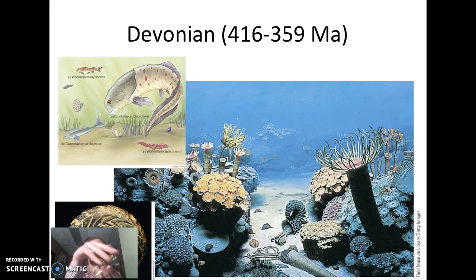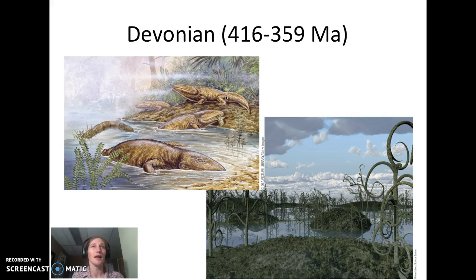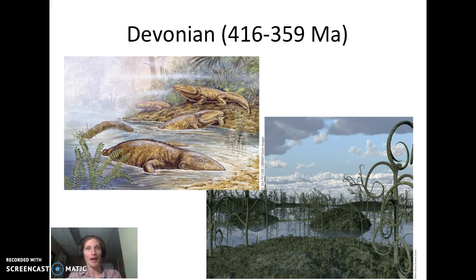On land in the Devonian, Ichthyostega was crawling around. It's thought that our lobed-fin fish started to move into shallow areas, and organisms that could breathe air would migrate from watery place to watery place, briefly going out onto land and then back into water where they preferred to be. That's how we tie the lobed-fin fish into the idea of our first tetrapods.